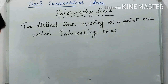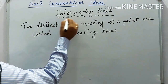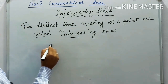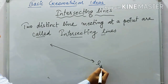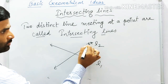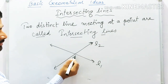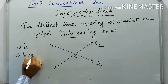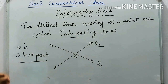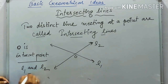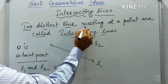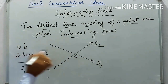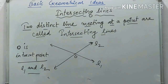The next topic is intersecting lines. Two distinct lines that meet at a point are called intersecting lines. Suppose line L1 and line L2 meet at point O — then O is called the point of intersection, and L1 and L2 are intersecting lines.